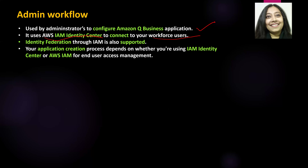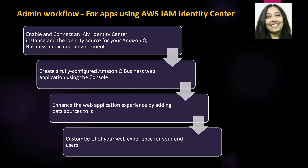If you do not have IAM Identity Center set up and connected, you can still do identity federation using IAM. Your Amazon Q Business web application creation process will depend on whether you are using IAM Identity Center or doing identity federation using AWS IAM for end user access management. So depending upon what you are using, your admin workflow flavor will change.